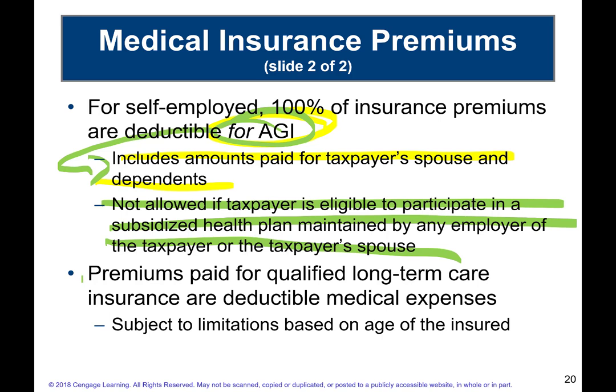The self-employed health insurance deduction is a for-AGI deduction. Long-term care insurance premiums, on the other hand, are a from-AGI deduction — they're treated as a medical expense itemized deduction, subject to the AGI hurdle. So the first bullet on this slide is for AGI (self-employed), and the bottom bullet for long-term care premiums is from AGI.